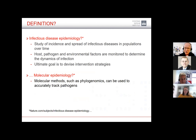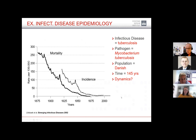What is molecular epidemiology of infectious disease? A Nature review defined it as studying the spread of infectious diseases in populations over time, examining host, pathogen, and environmental factors to determine infection dynamics — and doing it to devise intervention strategies. When you add the molecular epidemiology part, you use methods such as phylogenomics to track specific pathogens. Taking tuberculosis as an example: the disease, the pathogen Mycobacterium tuberculosis, the population of Denmark, a timeframe of 145 years.